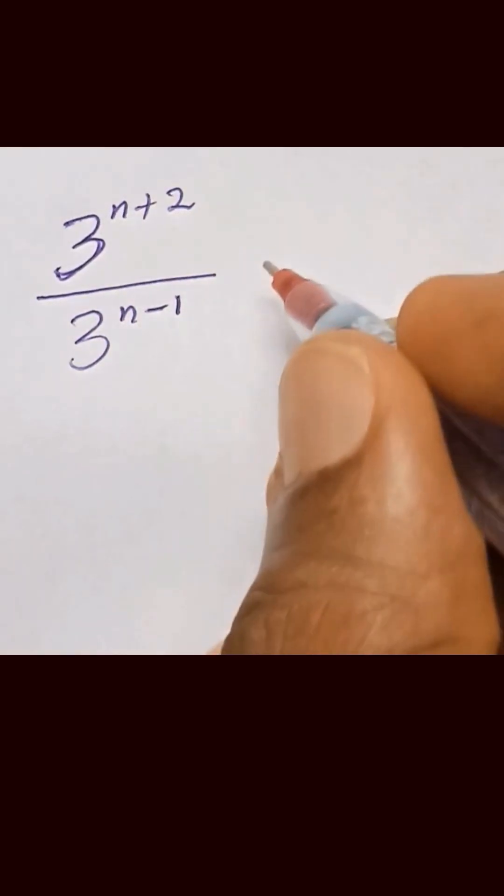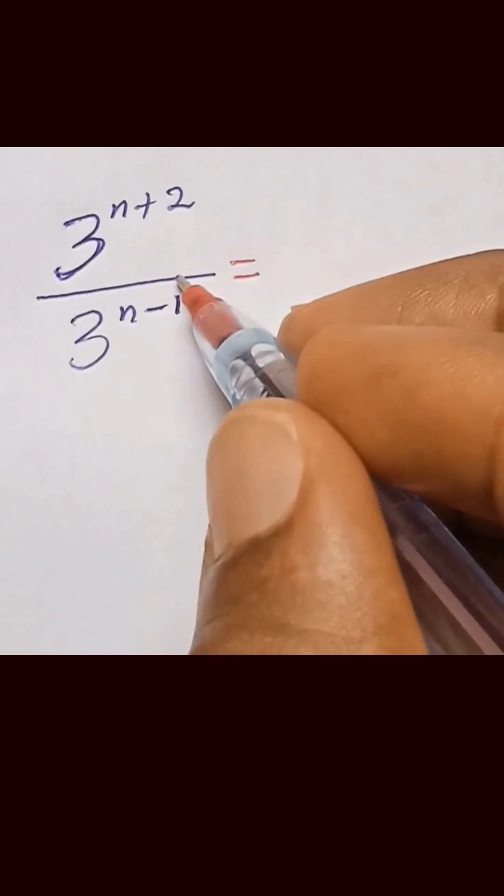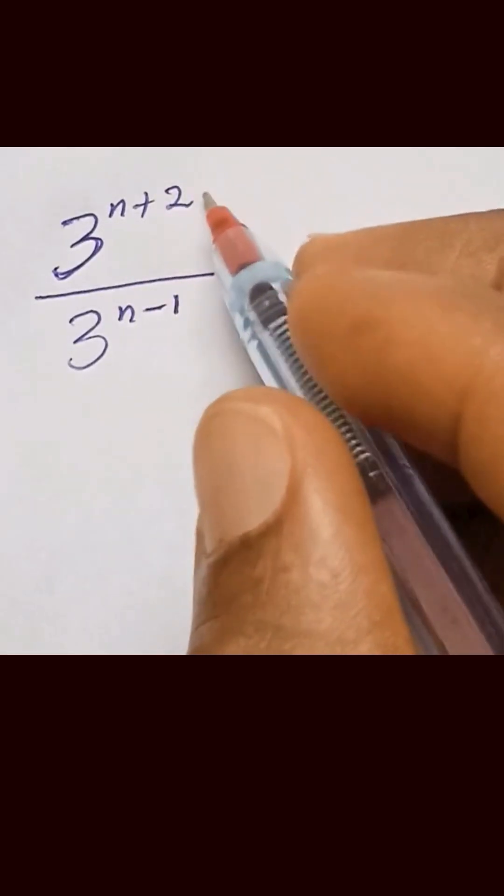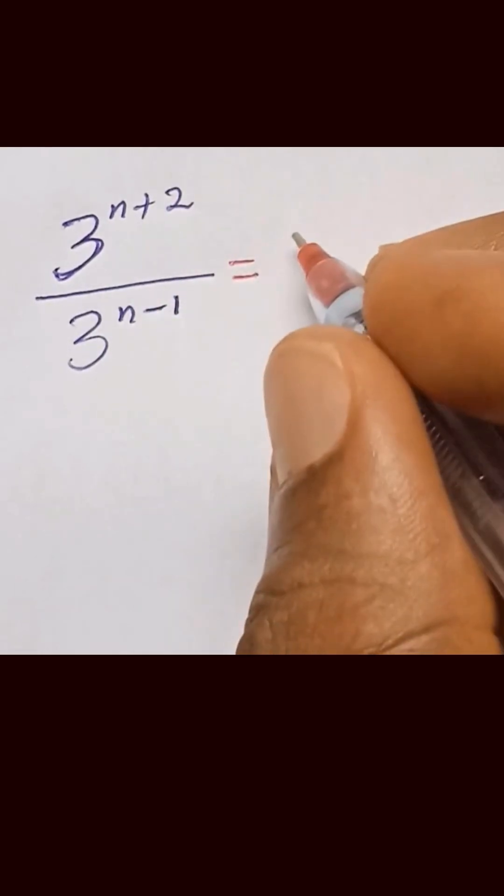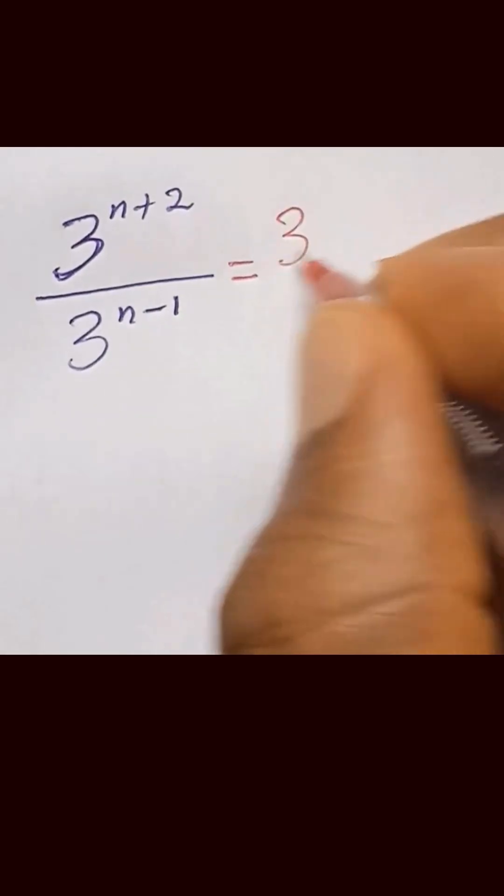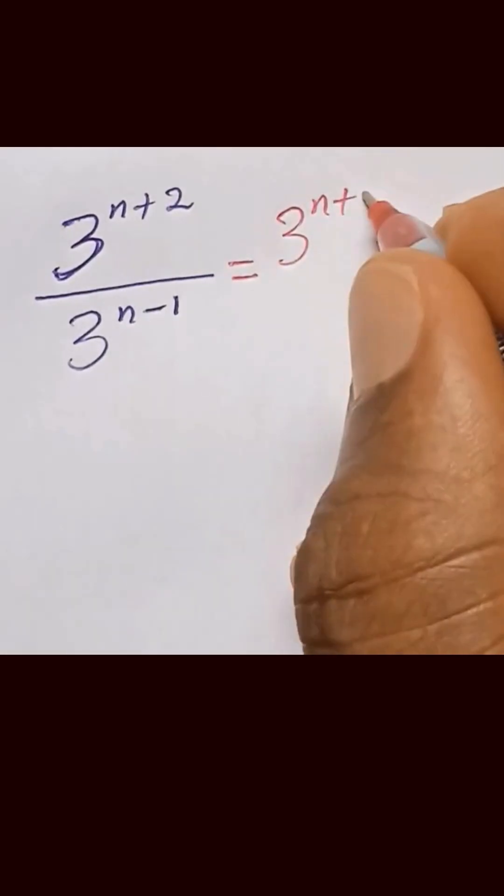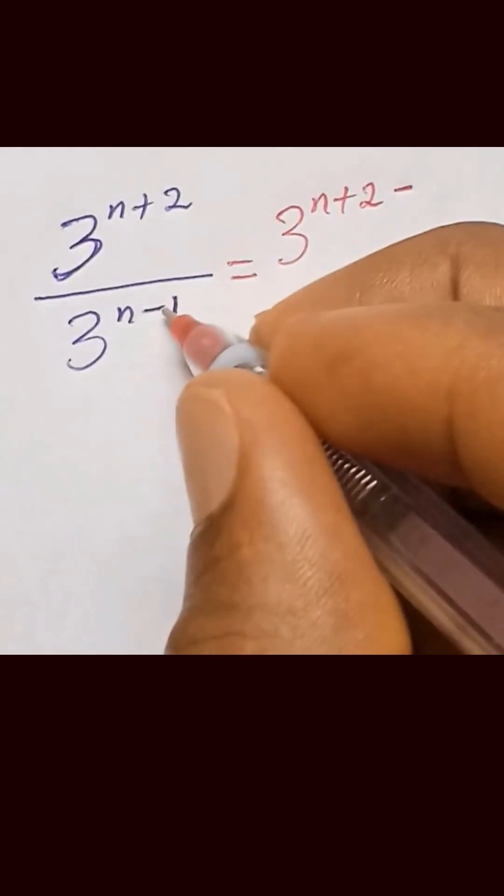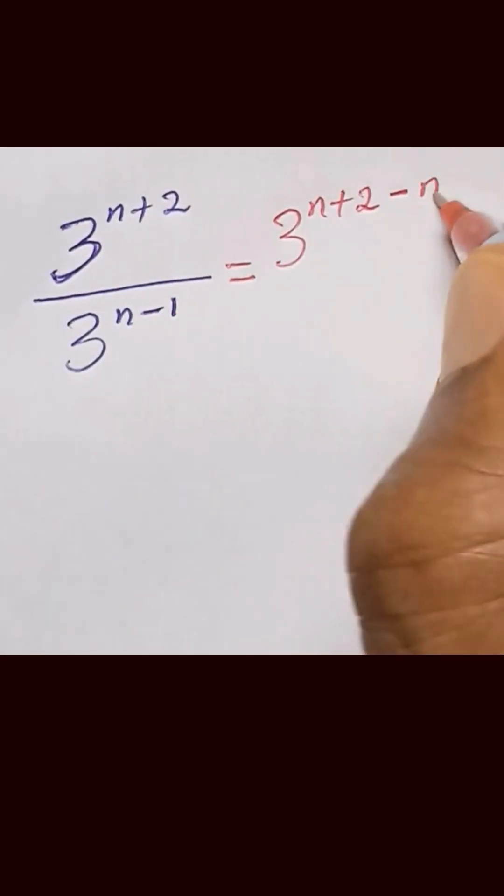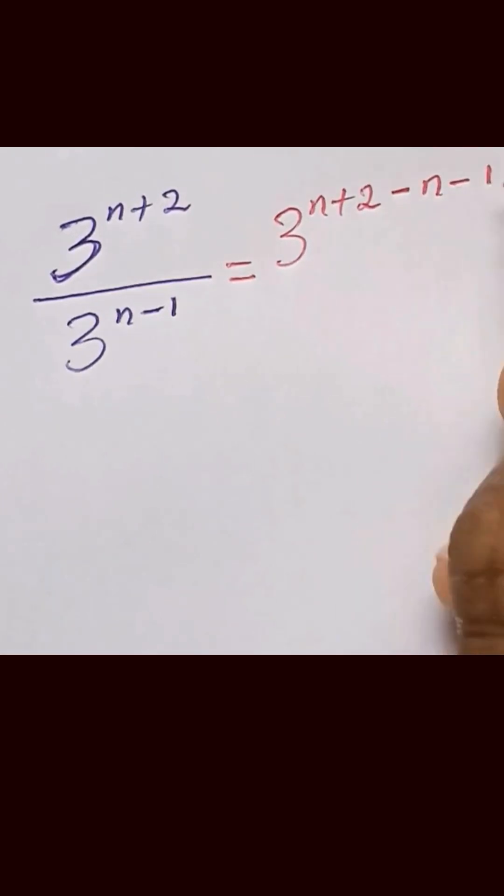What you need to do with this kind of exponent is to write it as this division sign. We change the sign between this exponent to minus. So we have 3 raised to the power of n plus 2. Before we write this, we put minus, then we write the power of the exponent of the denominator, n minus 1.